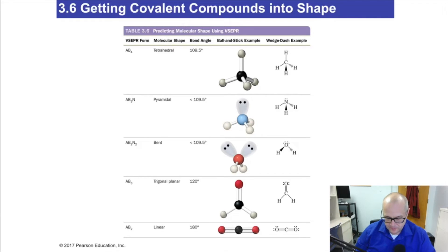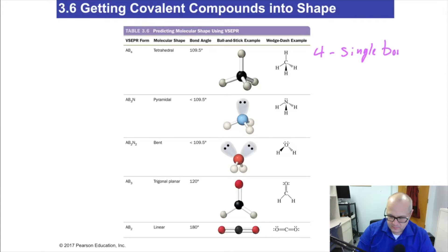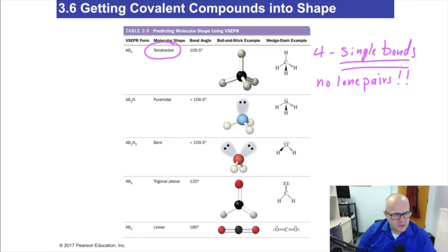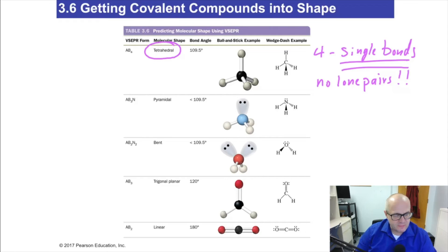Here's what you're looking for when you want to figure out what kind of shape you have. Four single bonds — if a central atom has four single bonds and no lone pairs, you are tetrahedral. Think of a tripod with a camera on it — that's kind of a tetrahedral shape. I'll bring the models to class and let you take a look at them so you can have a hands-on feel of them.